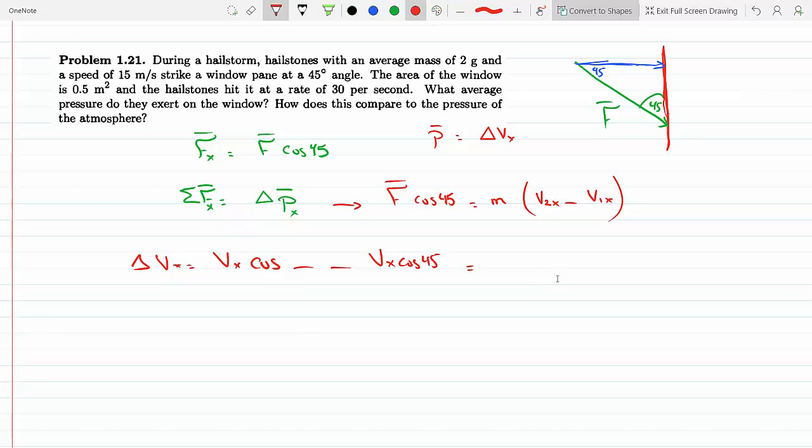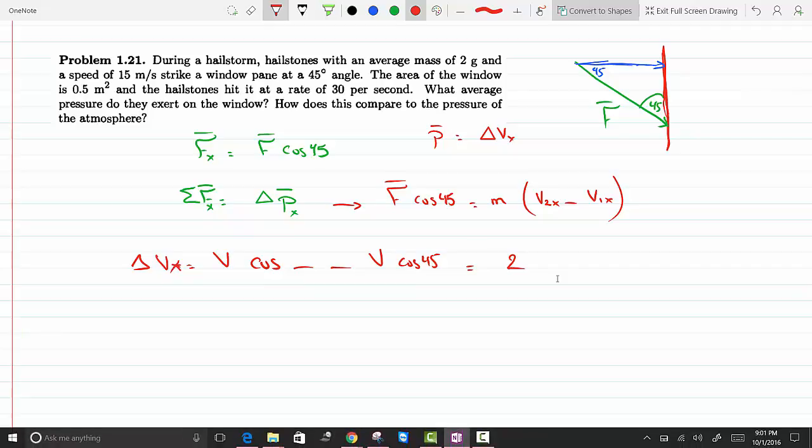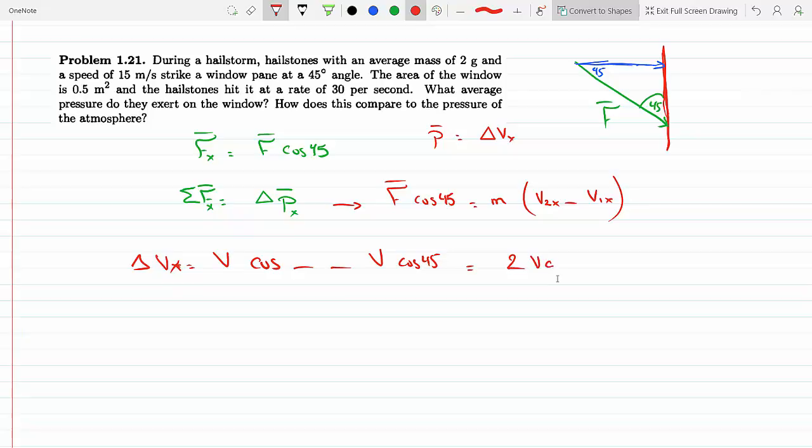So this would be 2V. V_X is V cosine 45, so this would be 2V cosine 45. So plug this in, I would get my F average would be M times 2V cosine 45.